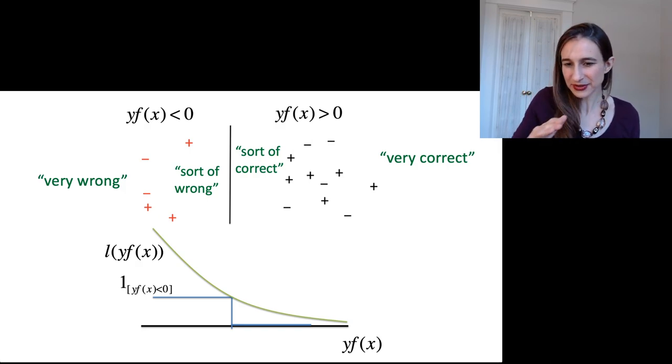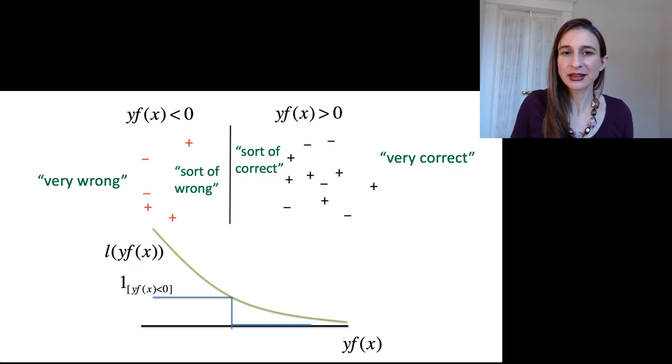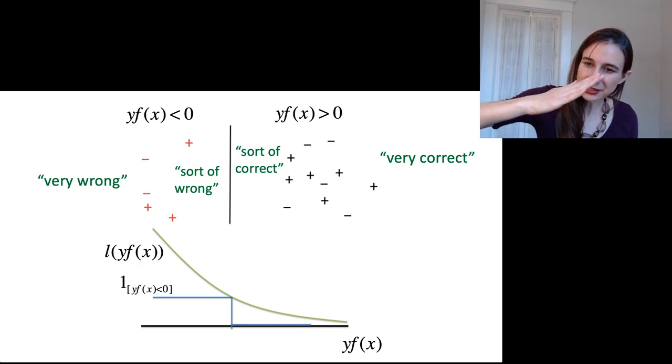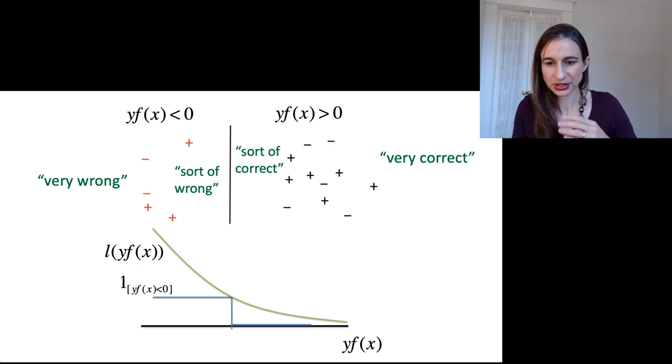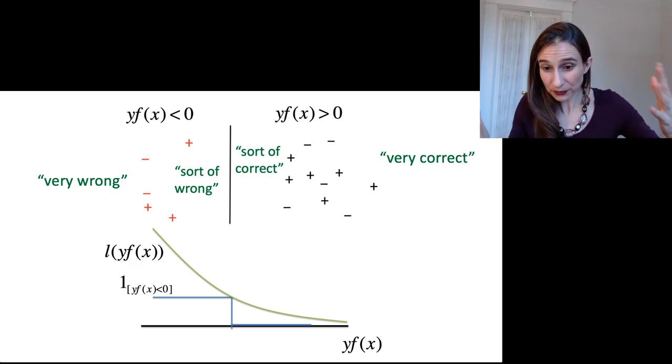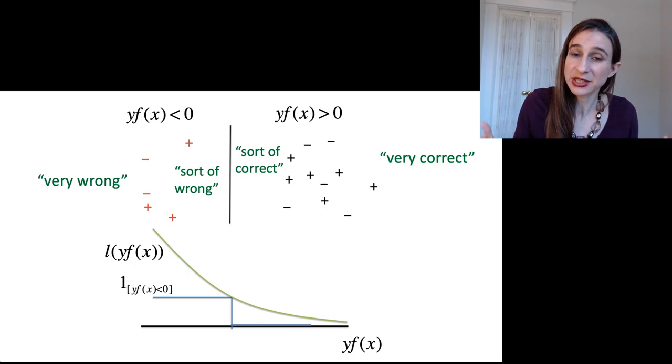So these loss functions, they're usually smooth. They're usually convex, and that allows us to minimize them. And the idea, of course, is that if you minimize the loss function, then you're hopefully also minimizing the misclassification error.